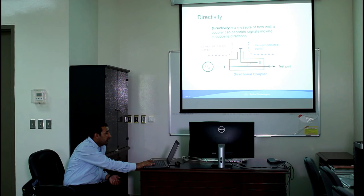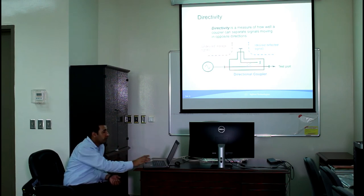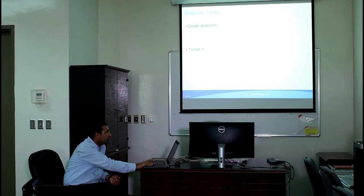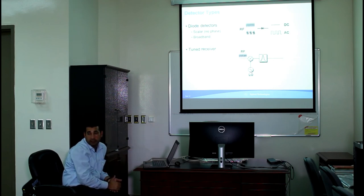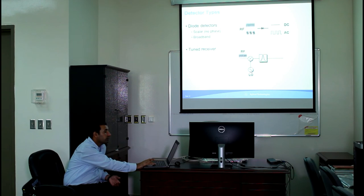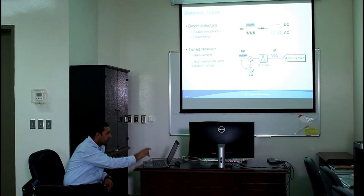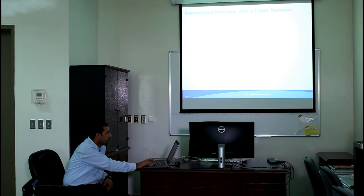If directivity is poor, there is a chance of signal leakage and mixing. The red signal is the reference signal and the other is the reflected signal coming back after reflection. In some network analyzers we use diode detectors; in others we use a tuned receiver as a detector. A tuned receiver uses a filter to filter out the wanted frequency.